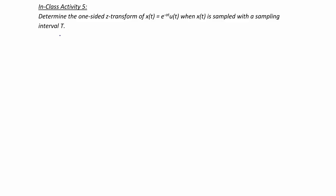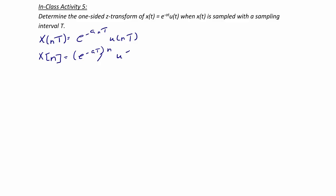In class activity five, determine the one-sided Z transform of X of t equal E to the negative A t U of t, when X of t is sampled with a sampling interval T. This is our first example of finding the Z transform of a continuous time signal using sampling. X of n T equals E to the negative A n T times U of n T, or in discrete time, X of n equals E to the negative A T raised to the n times U of n.